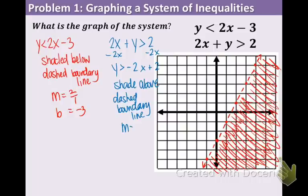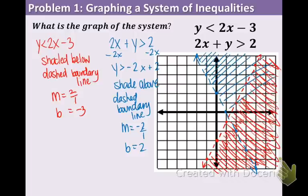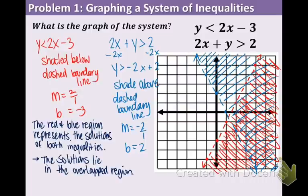The slope is negative 2 over 1 and the y-intercept is 2. Plot the y-intercept at 2, go down 2 over 1 for the slope, connect with a dashed line with arrows at the end, and shade above. When you shade in opposite directions using different colors, the overlap is clearly visible. The red and blue region represents the solutions of both inequalities, and the solutions lie in the overlapped region.